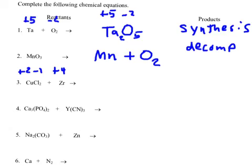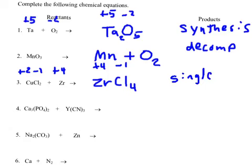There's only one other positive-negative combination I can make, and that would be to take this positive and combine it with this negative. You always put the positive one first, the negative one second. Now you look up their ionic charges: zirconium is a plus 4, chlorine is a minus 1. So we swap and simplify. I need one zirconium and four chlorides — that doesn't simplify. This type, because I have a compound reacting with a single element, we call a single displacement, or sometimes single replacement.